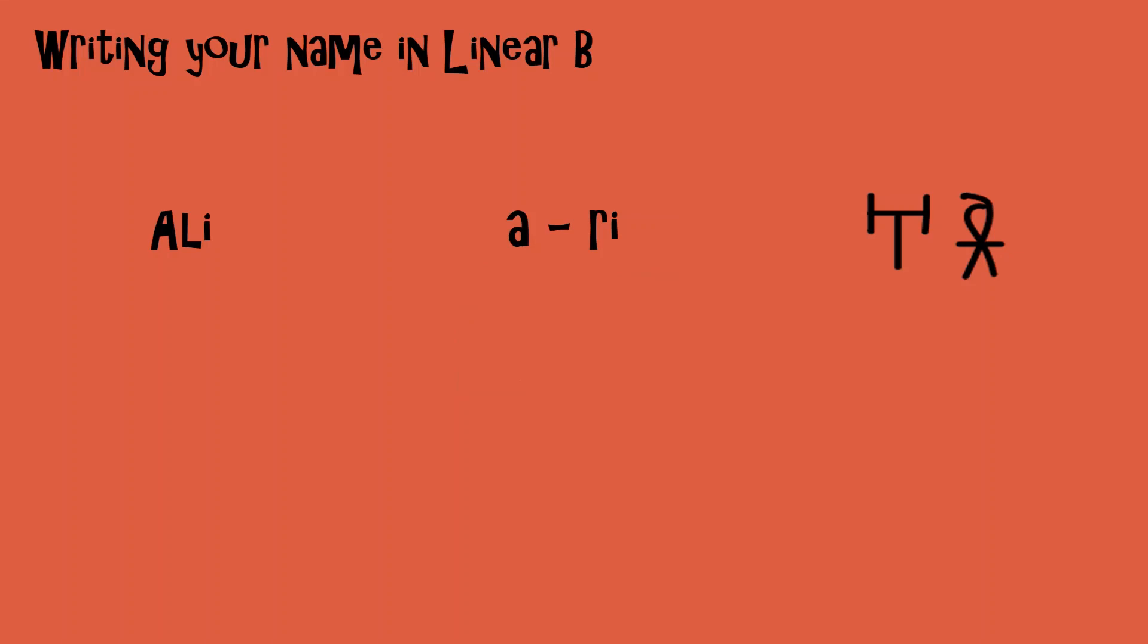Now Linear B is quite a complicated system, and sadly it doesn't have signs to represent all of the sounds that we might need in order to write a particular name. Some of its signs could double up. For example, the series that represents R, so if you look at the sheet, this is the signs for RA, RE, RI, RO and RU could also be used to write L.